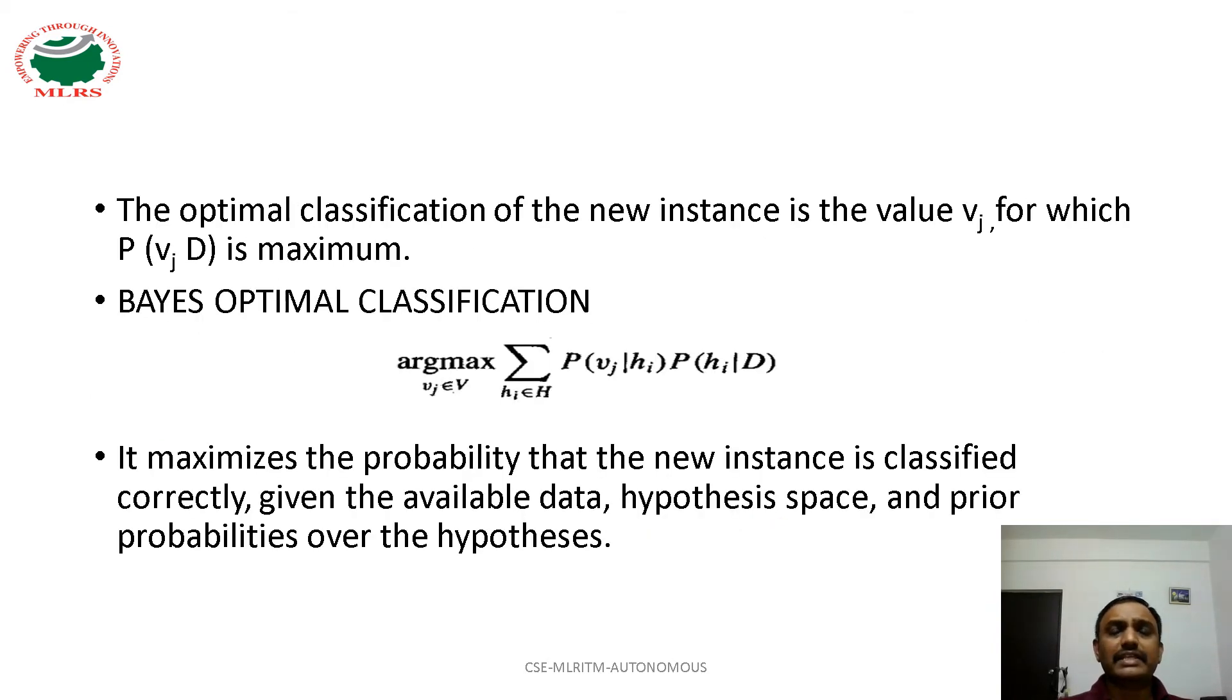The optimal classification of the new instance is the value Vj for which probability of Vj on D is maximum. That one we are taking as Bayes optimal classification.